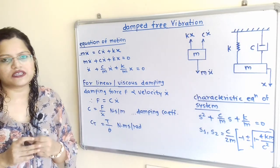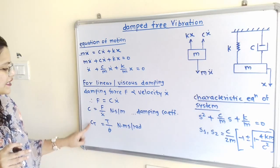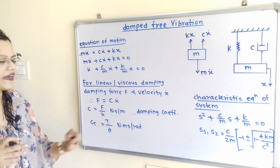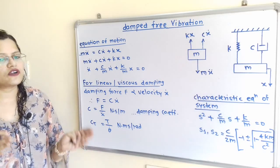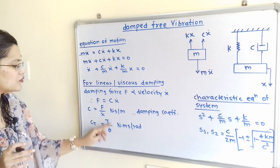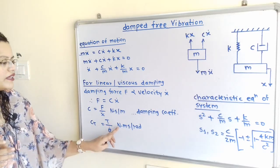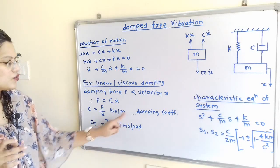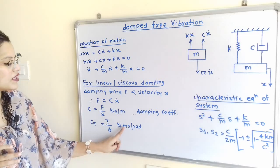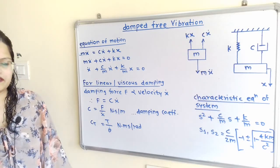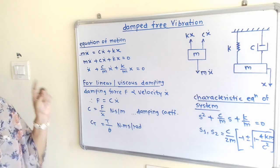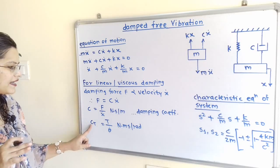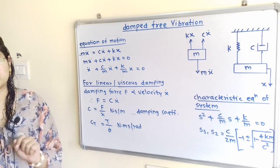For torsional motion we write Ct instead of C. Ct equals torque divided by theta dot, where theta dot is the angular velocity. The unit of torque is Newton·meter and the unit of theta dot is radians per second, so the unit of Ct is Newton·meter·second per radian. These are the damping coefficients for the linear and torsional systems.